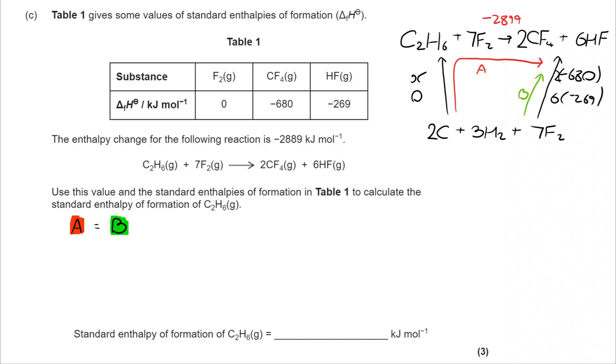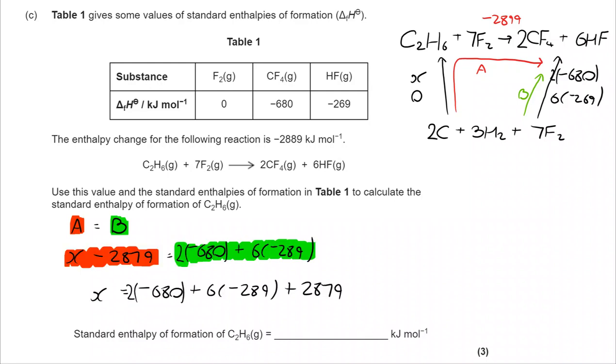We can now substitute the figures in that we have. I take my X and my negative 2879 as my red. My green is my two negative 680s and my six negative 289s. A little bit of rearranging to make X the subject, and it takes you to a value of X being negative 85.